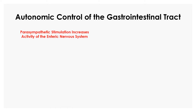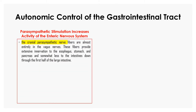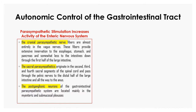Autonomic control of the GI tract — parasympathetic and sympathetic control. Parasympathetic stimulation increases the activity of the enteric nervous system. The cranial parasympathetic nerve fibers travel almost entirely in the vagus nerves, providing extensive innervation to the esophagus, stomach, and pancreas and somewhat less to the intestine down through the first half of the large intestine. The sacral parasympathetic originates in the second, third, and fourth sacral segments of the spinal cord and passes through the pelvic nerves to the distal half of the large intestine and all the way to the anus. The postganglionic neurons of the GI parasympathetic system are located mainly in the myenteric and submucosal plexuses.